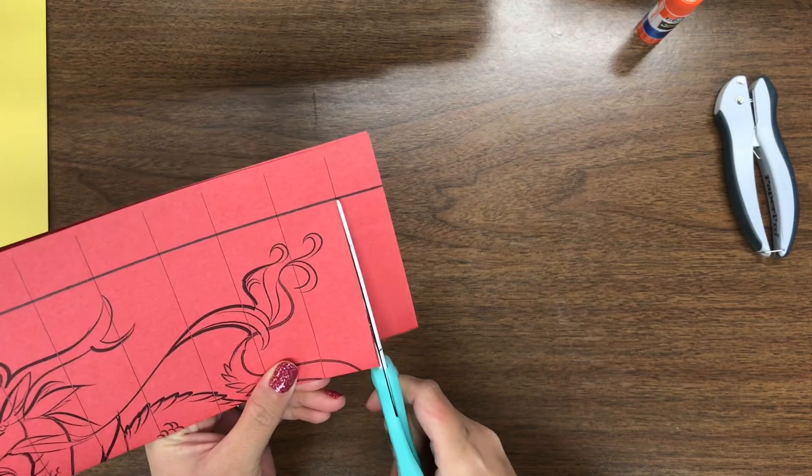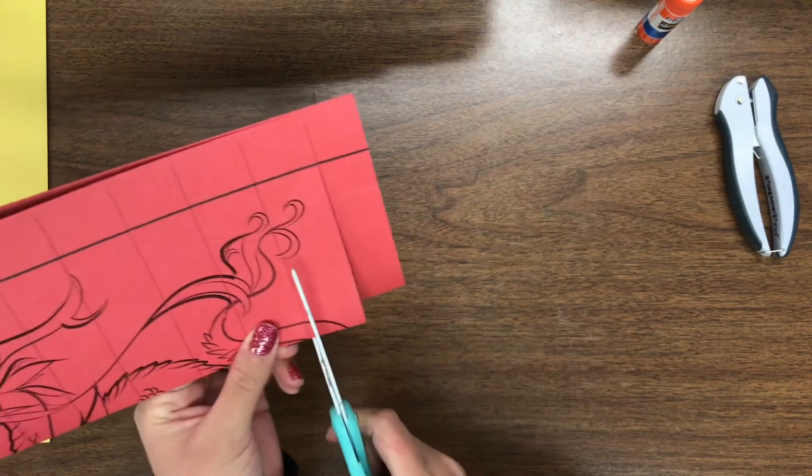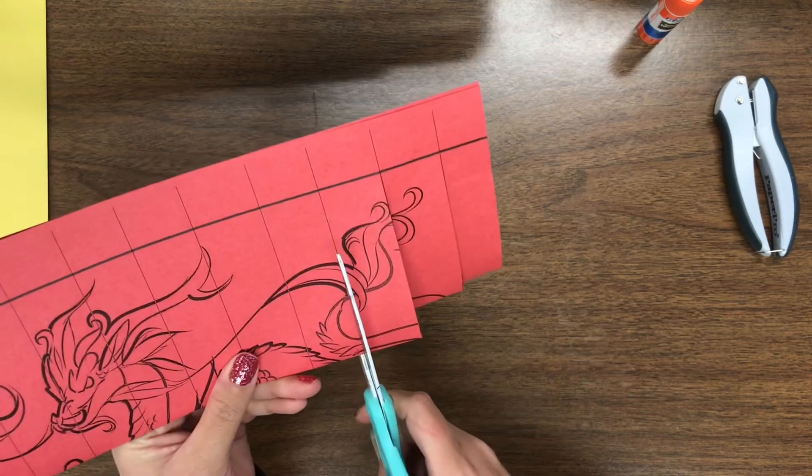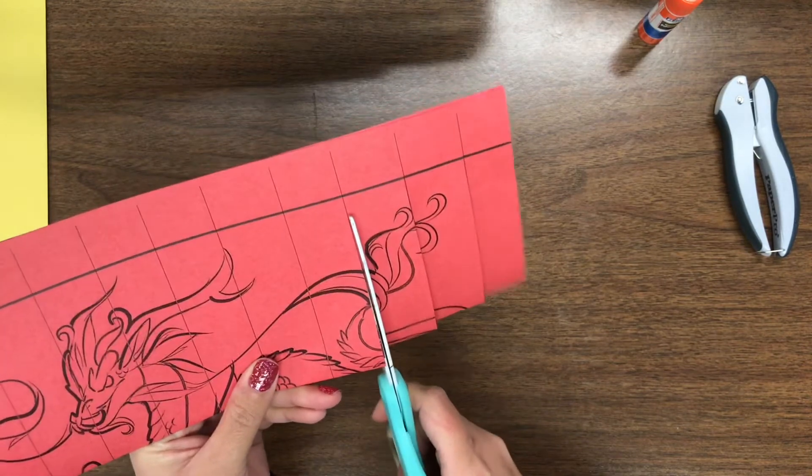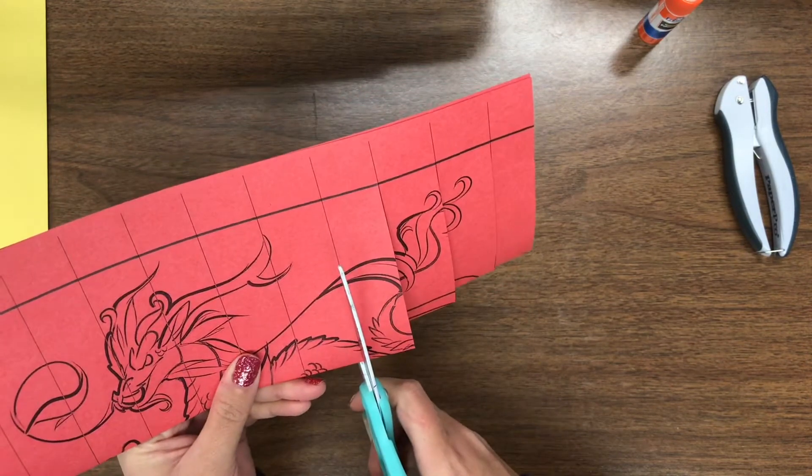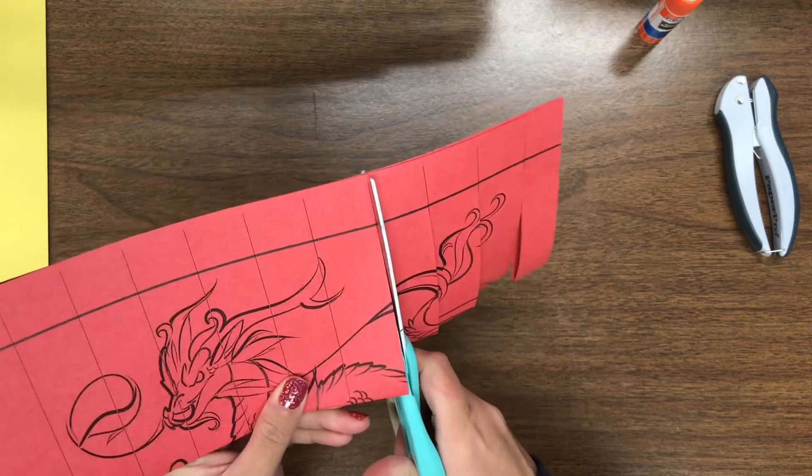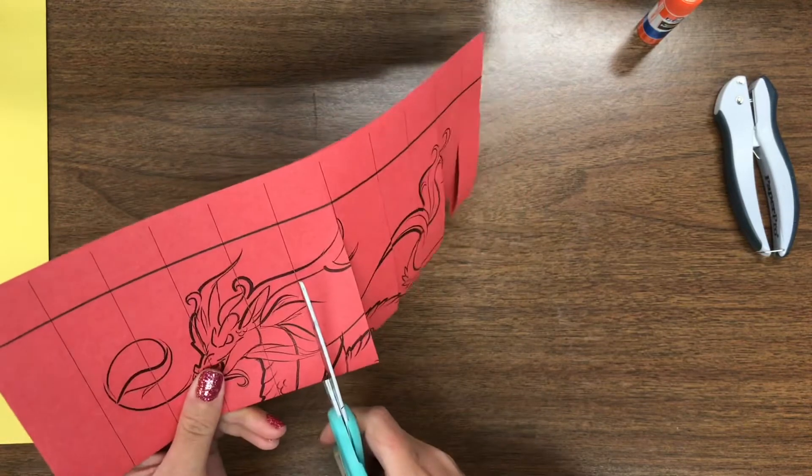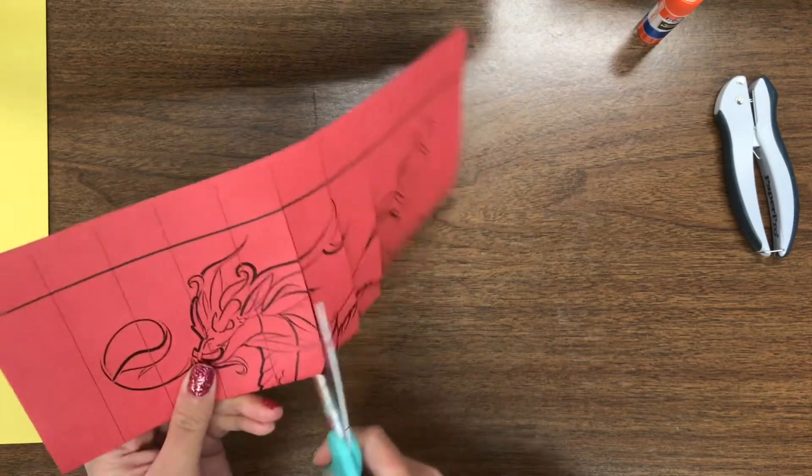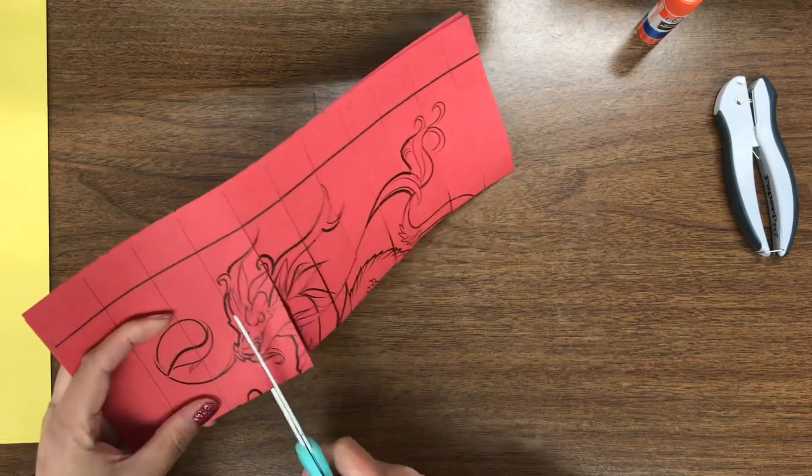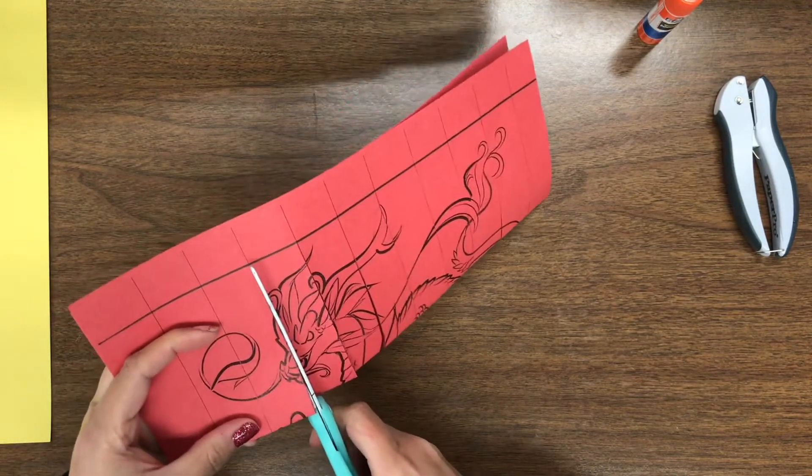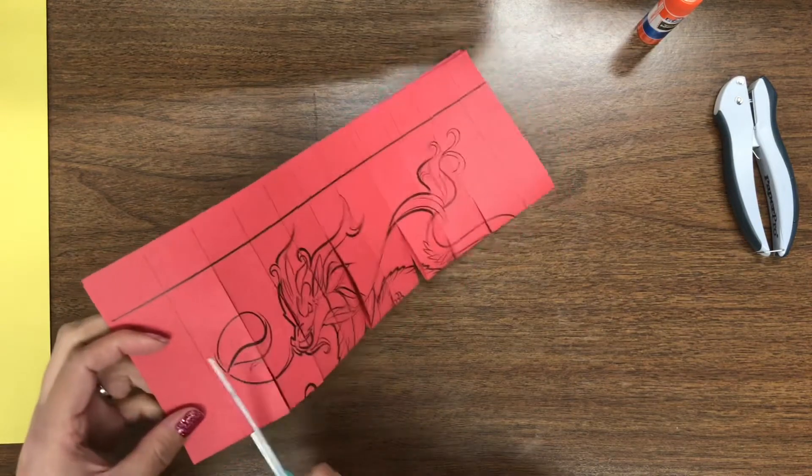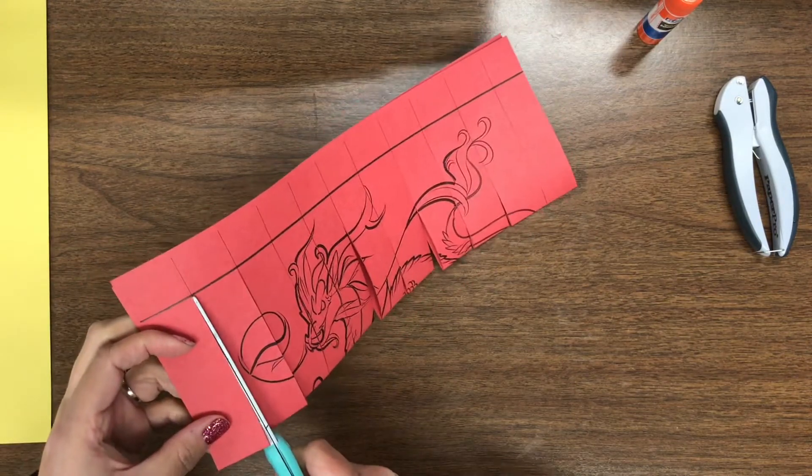So I'm gonna cut, cut, cut, stop. Then I'm gonna cut, cut, cut, cut. So every time you come to that big black line you're gonna stop. Okay? So you keep doing it on all the lines and then make sure you stop when you get to the big one.